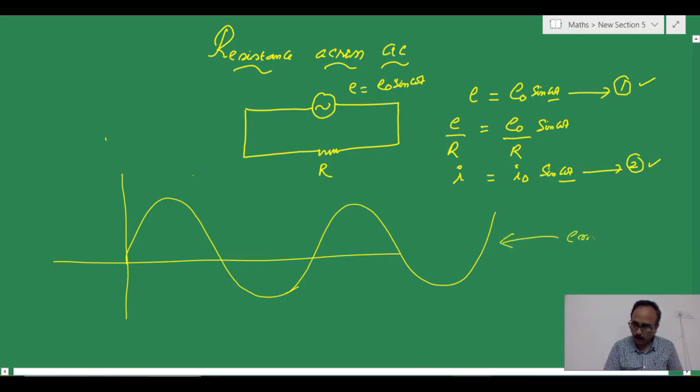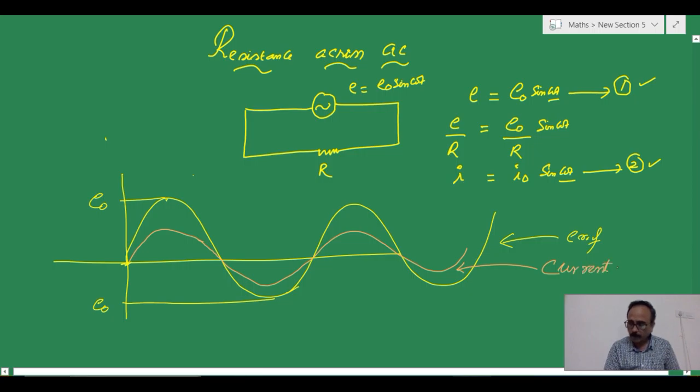Now, let us represent graphically the curves for EMF and current. EMF. So, this graph is for EMF. E not starts with 0 raising to its maximum peak value E not and this is negative peak value E not.